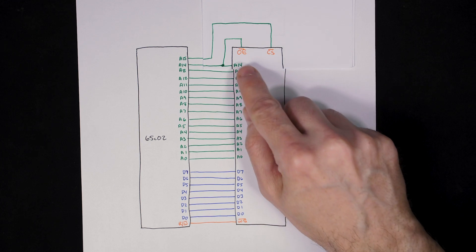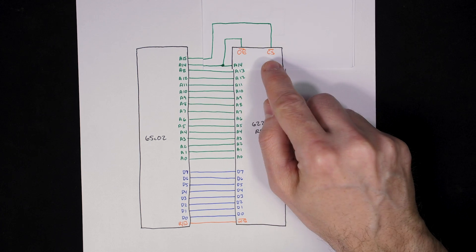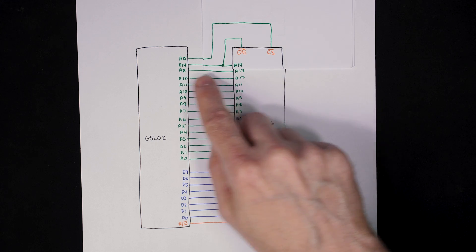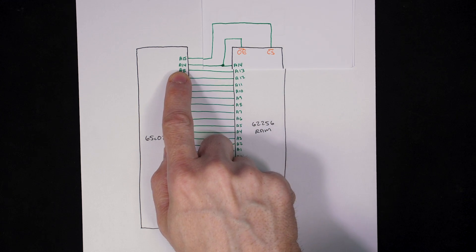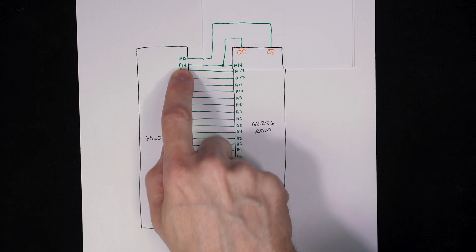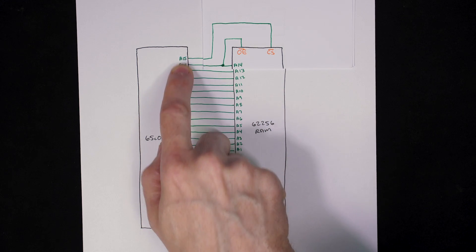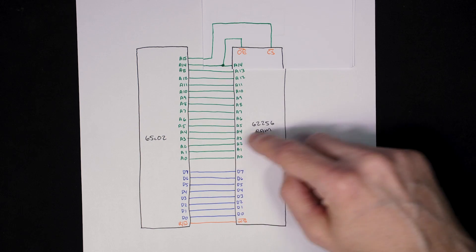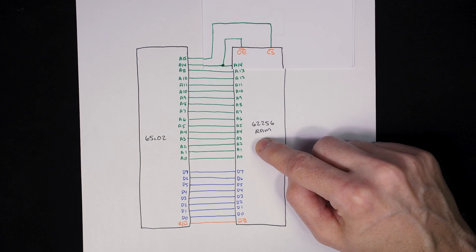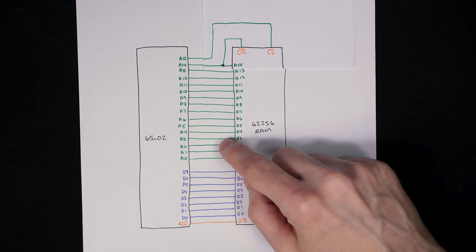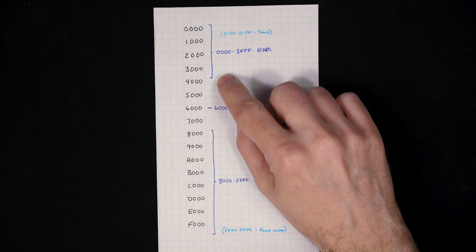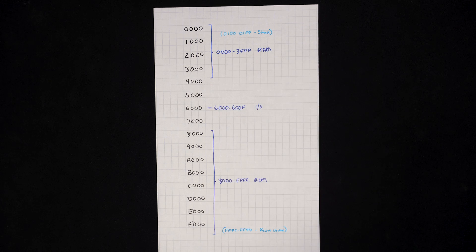The RAM chip has a couple of control signals to enable it. We can hook those up to address lines 14 and 15, so that when both are low the RAM is enabled. That ensures the RAM is enabled any time the address is between 0x0000 and 0x3FF, which is the range we want to use for the RAM.